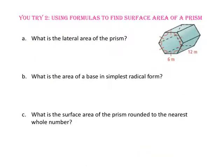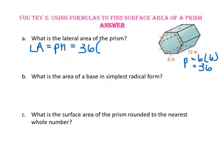Pause the video and do you try number two. For part A, what is the lateral area of the prism? Lateral area is the perimeter of the base times the height. Since the base is a hexagon, we multiply six times the side length of six, giving a perimeter of 36. The height of the prism is 12. Multiplying 36 times 12 gives a lateral area of 432 square meters.